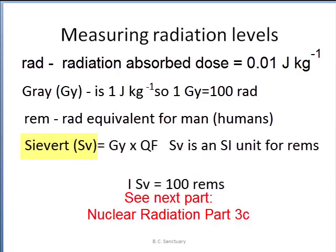A sievert, with the units of Sv, is the SI unit for a rem, and is given by the dose in grays multiplied by the quality factor. The gray is also an SI unit, but without the quality factor.